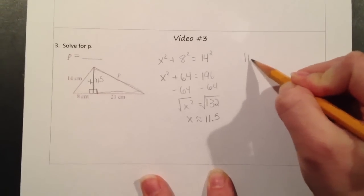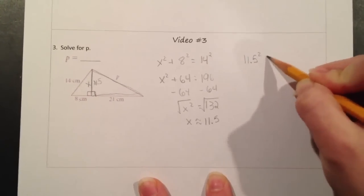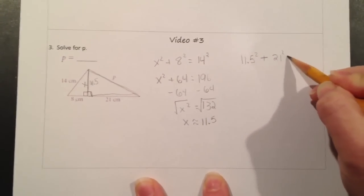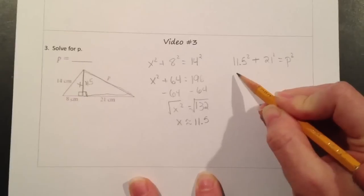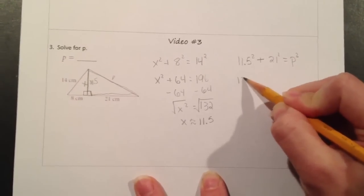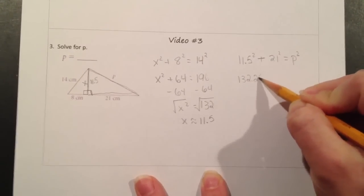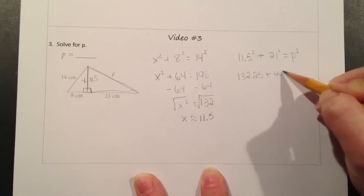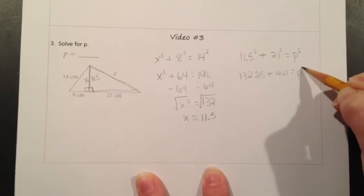One leg is 11.5, so 11.5 squared, plus the other leg, 21 squared, is equal to p squared. So 11.5 squared is 132.25, plus 21 squared, which is 441, is equal to p squared.